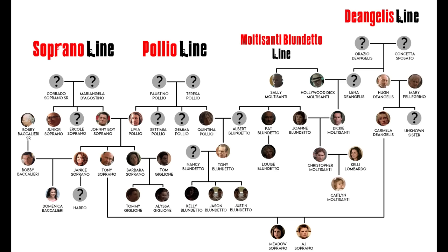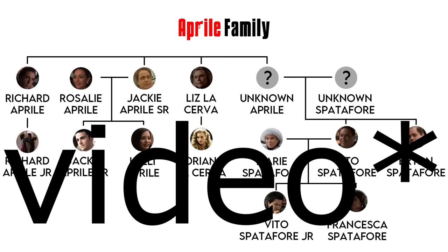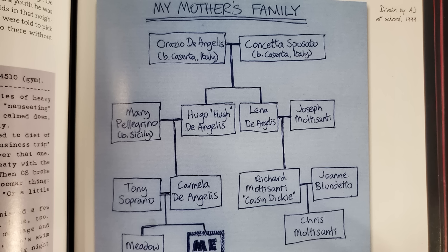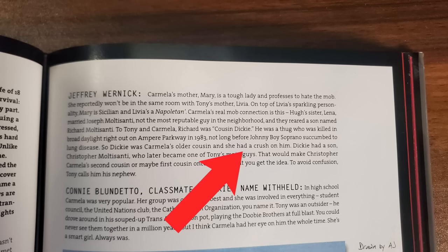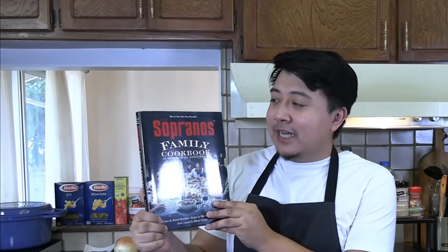Since we're here, I thought I would go through and explain some of the more obscure family members and what we know about them. Before we get started, I want to give a shout out to two sources I used when making this. One is the Soprano's Family History Book. This book not only gives a great breakdown of the family tree, it also has a lot of character backstory not found in the show itself. Interestingly, the book was written by Alan Rucker, the same guy who did the Sopranos cookbook that I used in my Cooking with Kino video.